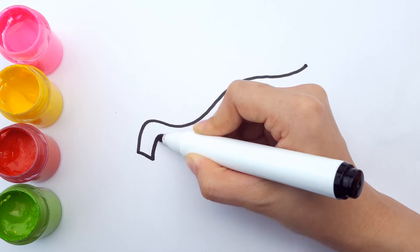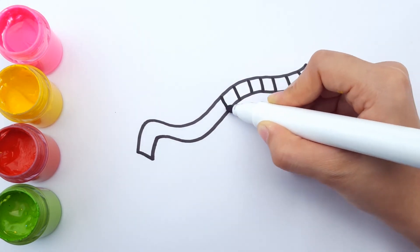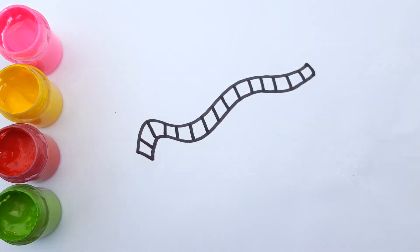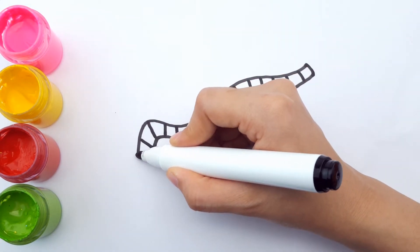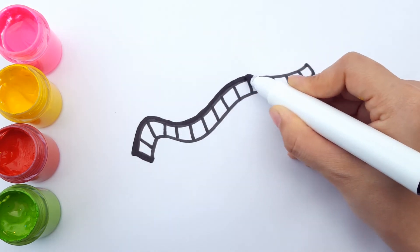Let's make a squiggly line and add some stripes. Let's make a big bold line around our worm friend.